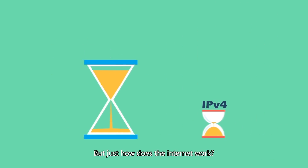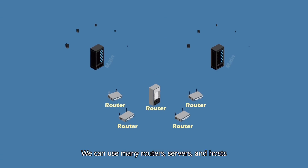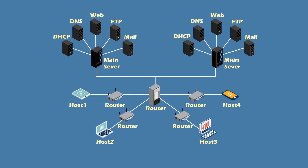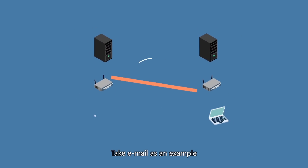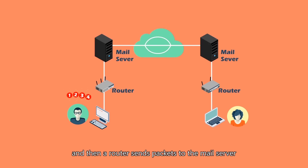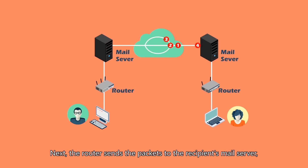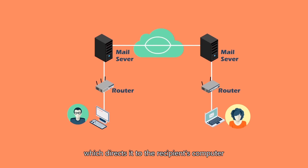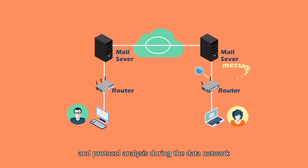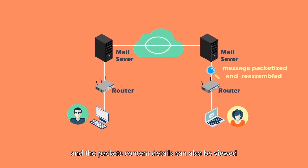But just how does the Internet work? We can use many routers, servers and hosts to demonstrate how information is transmitted over the Internet. Take email as an example. When you send an email, the message is first packetized and then a router sends packets to the mail server. Next, the router sends the packets to the recipient's mail server which directs it to the recipient's computer. A packet analyzer can also be used to conduct message packetization and protocol analysis during data network transmission, and the packet's content details can be viewed.